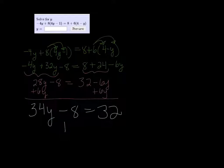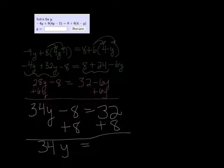Now I'll add 8 to both sides. So I have 34y = 40. And my last step will just be to divide by that 34 that's in front of the y.